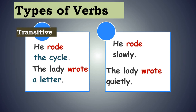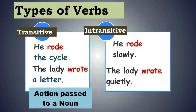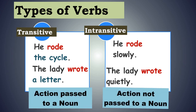Such verbs where the action is not passed over are called intransitive verbs. So one verb can be used both ways — transitively as well as intransitively. When the verb is followed by an object, then it is a transitive verb. Intransitive is when the action is not passed over to an object.